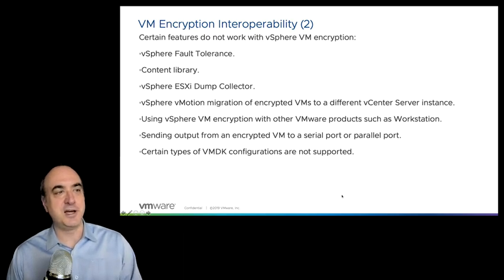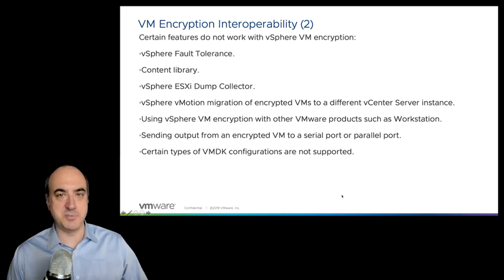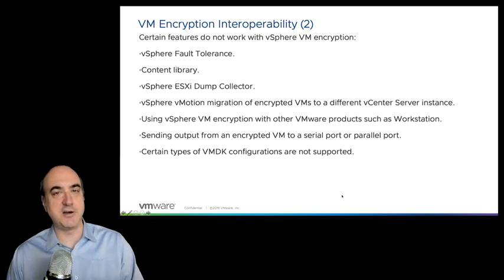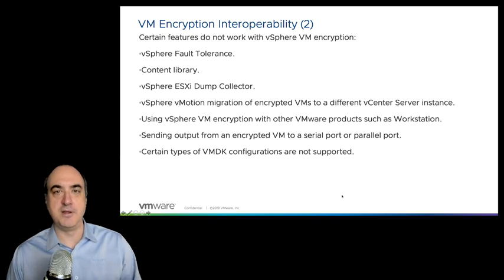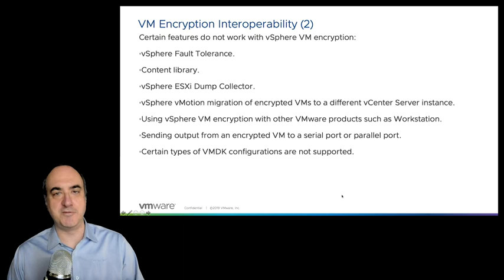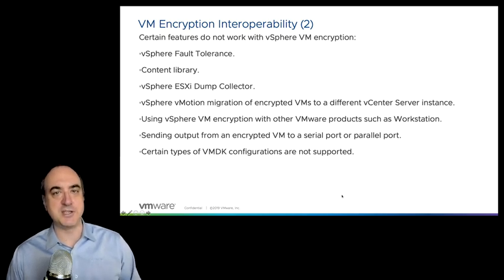There is no fault tolerance support. Regarding the dump collector: if the ESXi server produces a core dump, that core dump must also be encrypted. When we say the ESXi dump collector, we're basically sending core dumps over a network — that's usually when we're talking about auto deploy, where the hosts are stateless and not booting from a hard drive, so they have to send their core dumps over the network. That is not encrypted, so it's not supported with VM encryption.